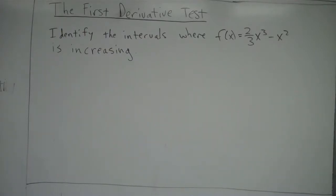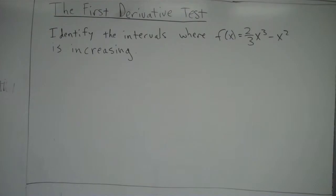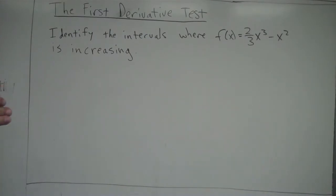Alright, let's take a look at an example. In the previous video we talked about the first derivative and what it tells us about the function f. In this case the problem says: identify the intervals where f of x equals two-thirds x cubed minus x squared is increasing. We said that f is increasing when f prime is greater than zero.